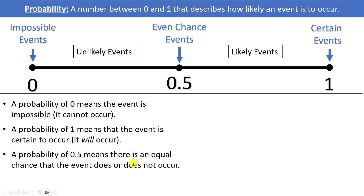A probability of 0.5 means there is an equal chance that the event either does or does not occur. An example of an event with a 0.5 chance is flipping heads on a fair coin.